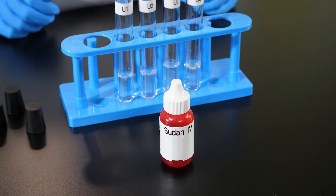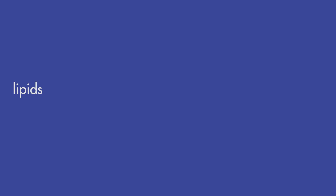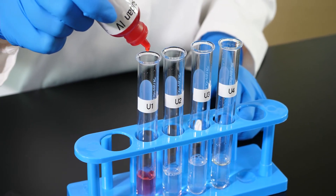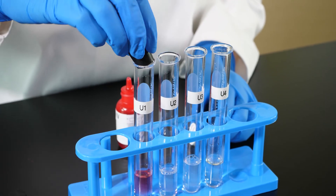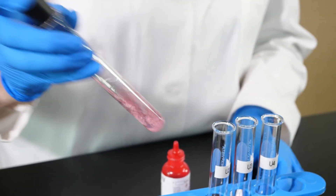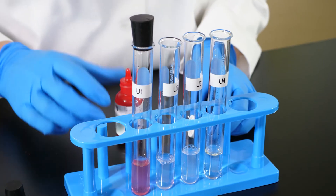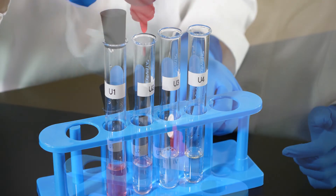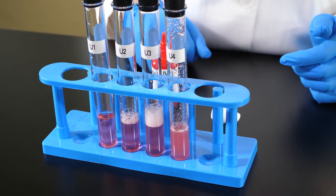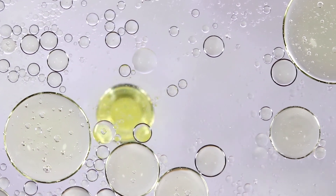Sudan 4 is a red dye that turns any solution red. But if lipids are present in the solution, a positive reaction between Sudan 4 and lipids will occur, and the lipids will turn dark red. We add 20 drops of Sudan 4 to a sample of each of the unknown solutions. Since lipids do not easily dissolve in water, we need to shake the test tubes vigorously to mix the Sudan 4 with any lipids. Any lipids present will eventually separate from the water and form a layer on top, since lipids are less dense than water. If we see a dark red layer floating on top of the water, we know lipids are present.